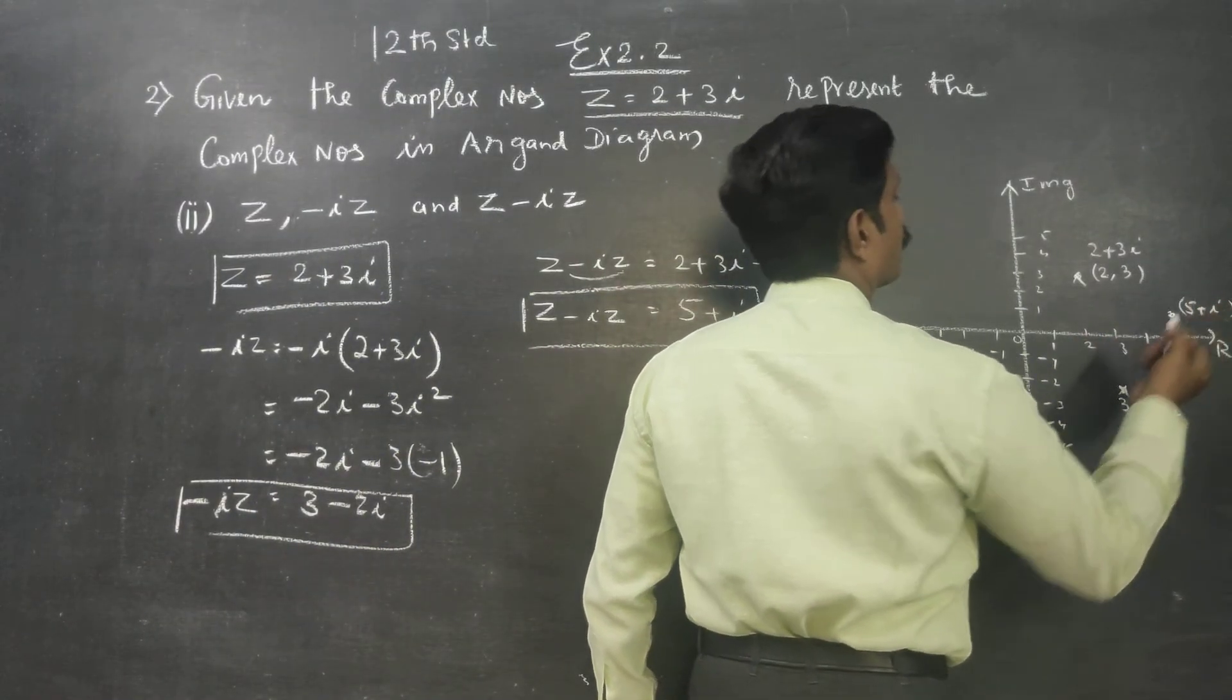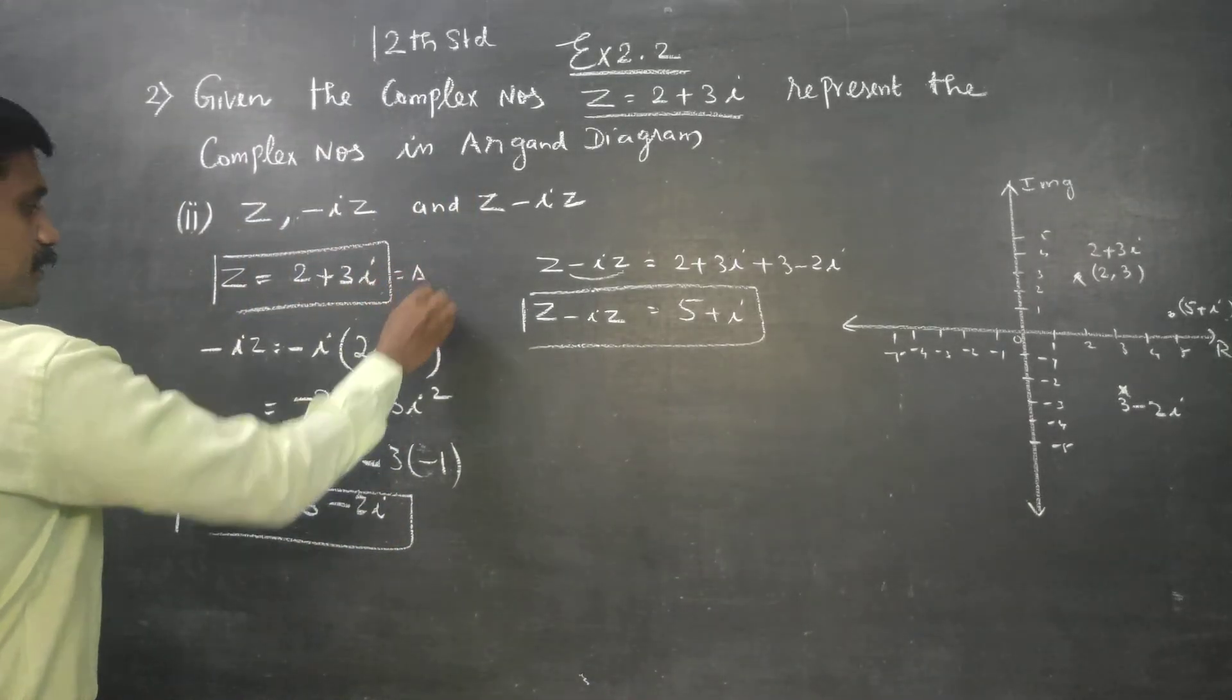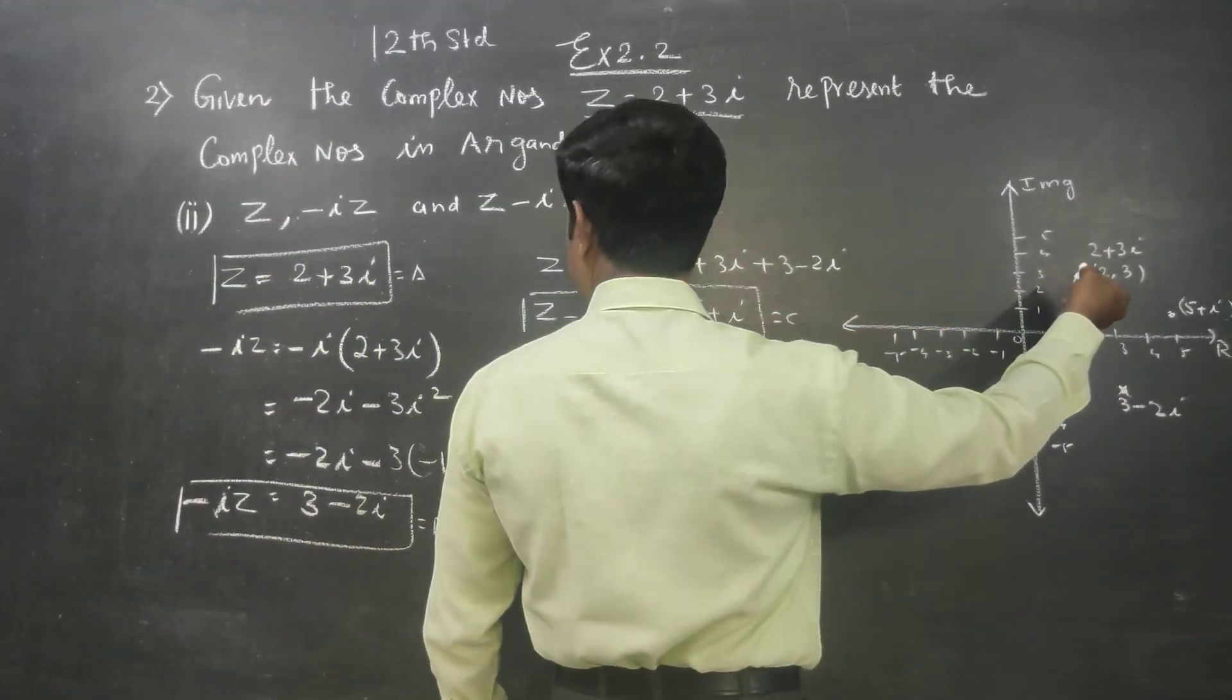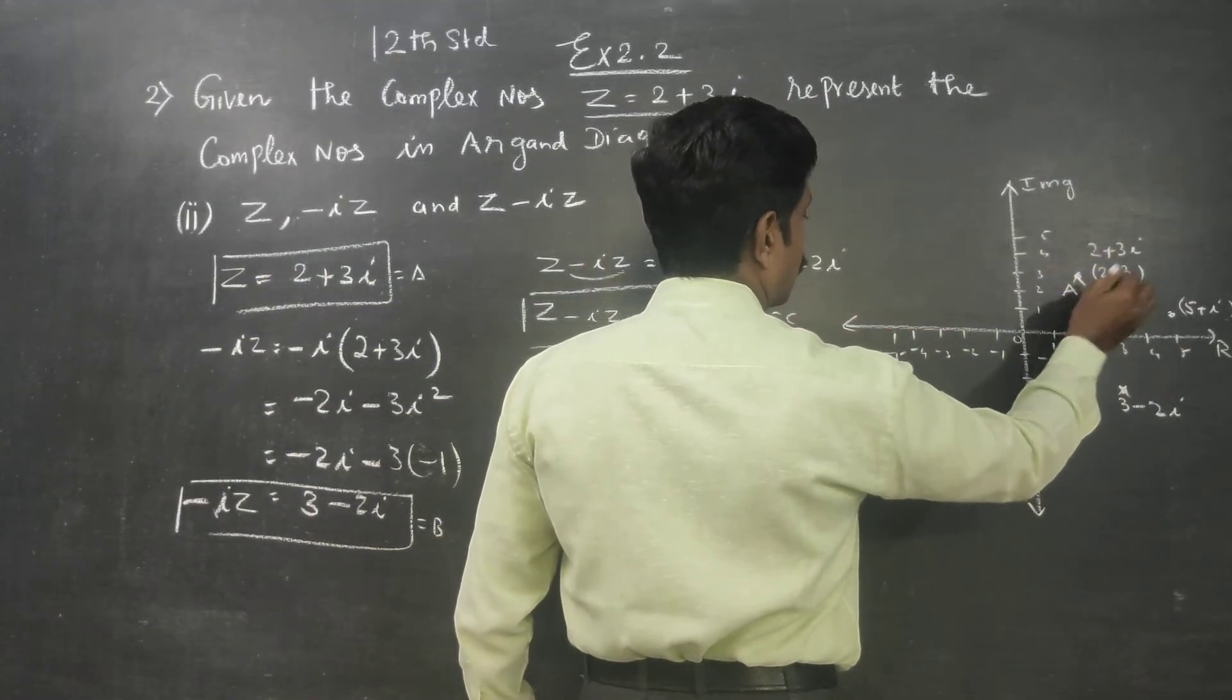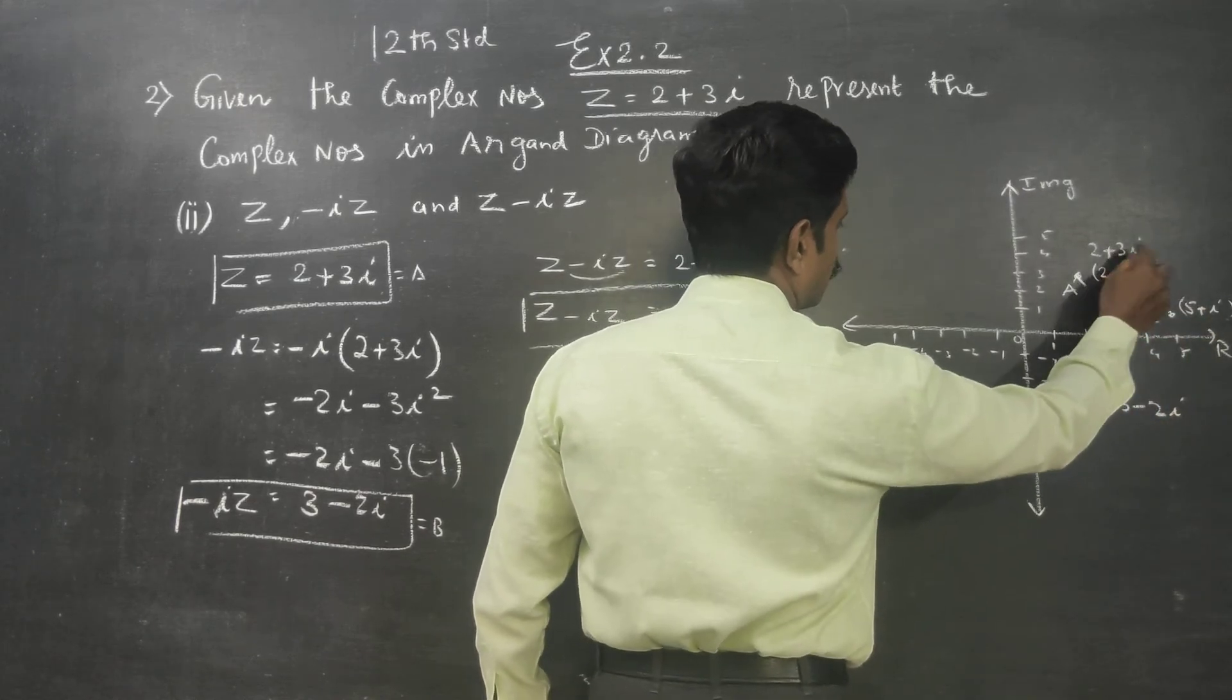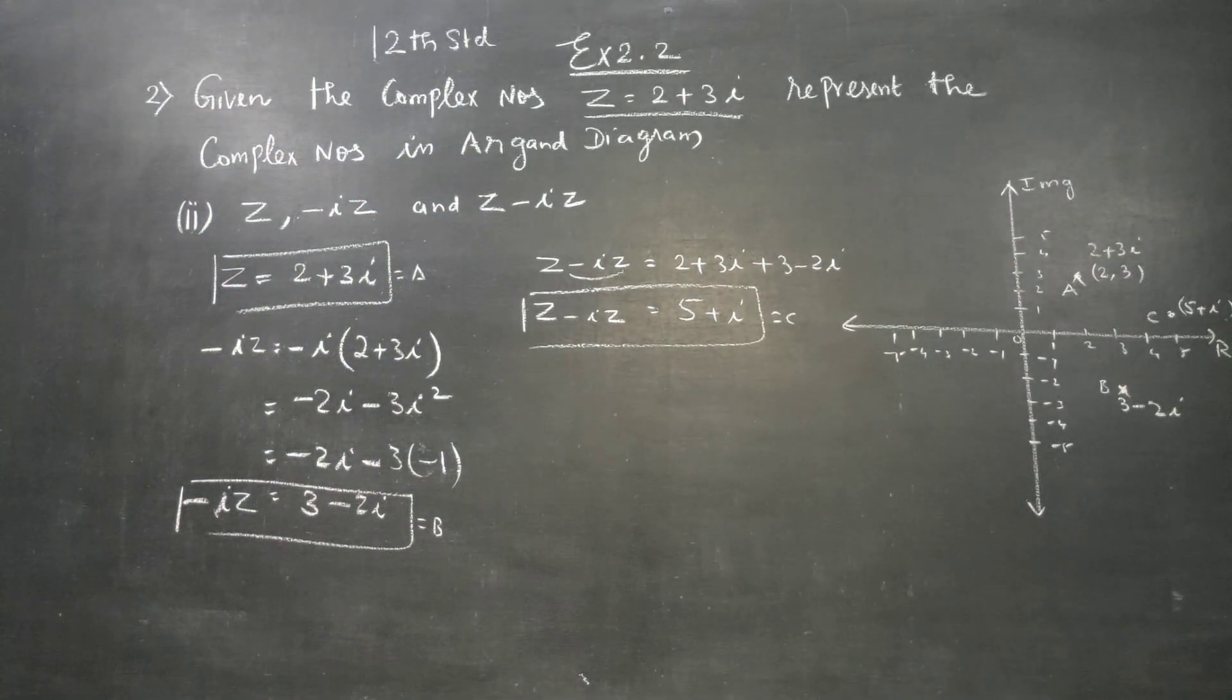Three points represented. If you want, call them point A, point B, and point C. But this is more than enough: 2 plus 3i, 5 plus i, 3 minus 2i. Thank you.